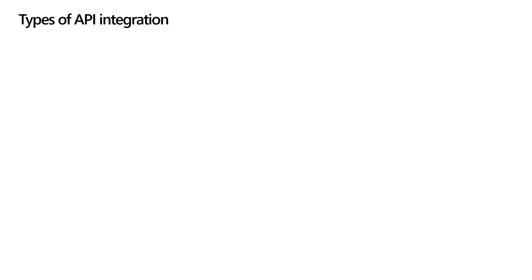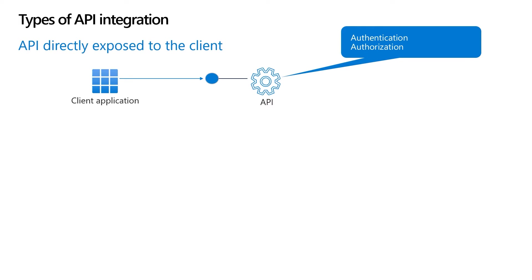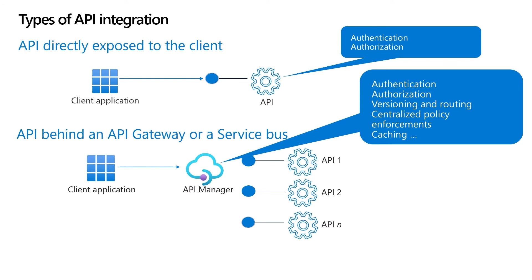Moving on to the types of API integration, we see two prevalent patterns. The first method is applications directly calling an API. This approach is mainly seen in single-page type applications where the API is responsible for performing the authentication and authorization functions. In the second integration pattern, you inject an API manager between the caller application and the API. When you do this, you could offload authentication, authorization, sometimes versioning and routing, centralized policy enforcement, as well as caching and optimizations for performance into the API manager. This allows the API manager to do the heavy lifting rather than each API having to implement the required logic and code.